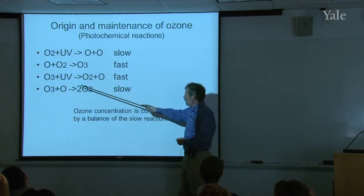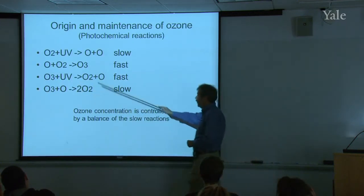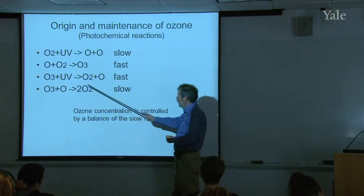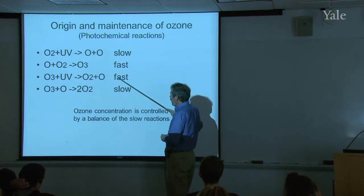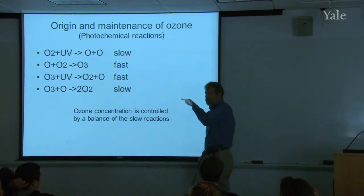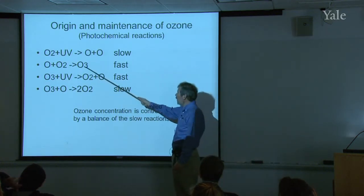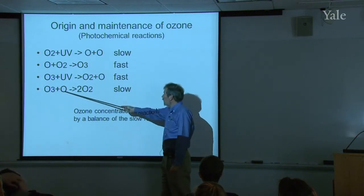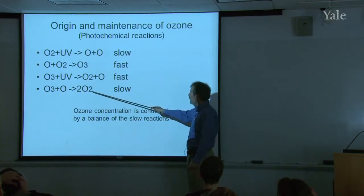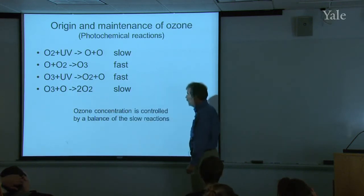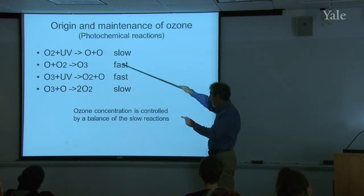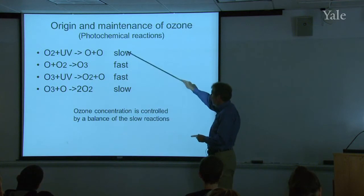Equally fast, other ultraviolet photons — they don't have to be as energetic; UVA, the near ultraviolet — will dissociate ozone back to O and O₂. So you've got rapid recycling going on between those two forms all the time in the stratosphere. Occasionally ozone interacts with one of these oxygen atoms and goes back to O₂, the common form, and then it's permanently lost. The ozone concentration is controlled by ignoring this rapid cycling — it's controlled by the balance of the two slow processes.